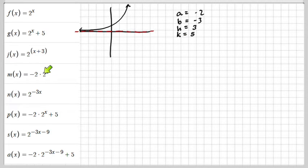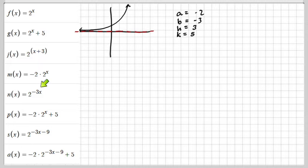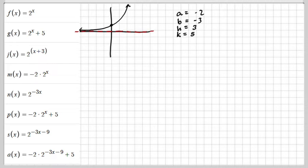So for our discussion, I have specific numbers for each of the values that can transform this function. This one has the H, this one has the K, this one has the A, and this one has the B. We also have some combinations of those — the last three would be our hardest ones. One more thing about the exponential function: the point (0, 1) is there for any exponential function — it doesn't matter what the base is, it's always there.